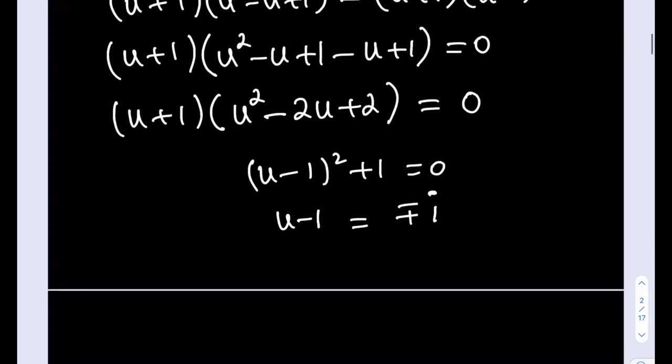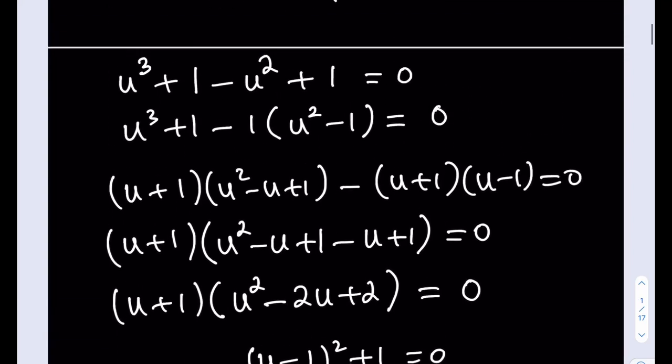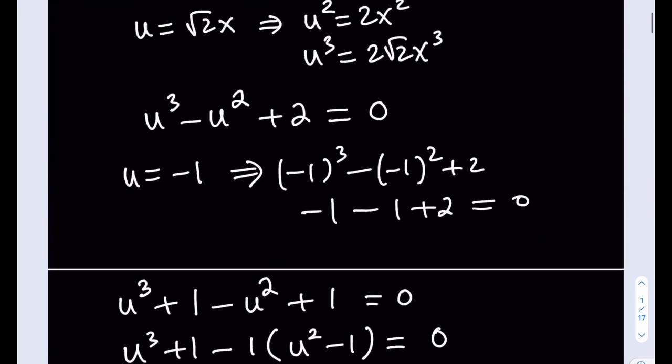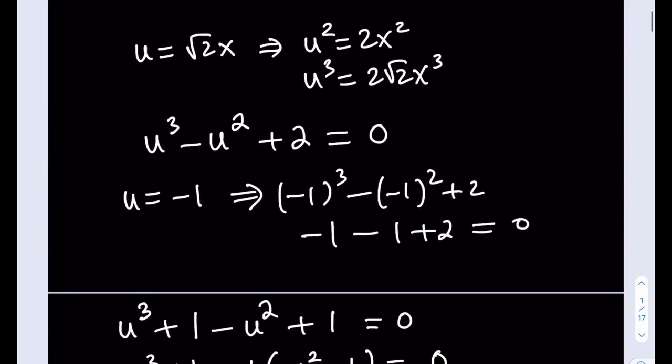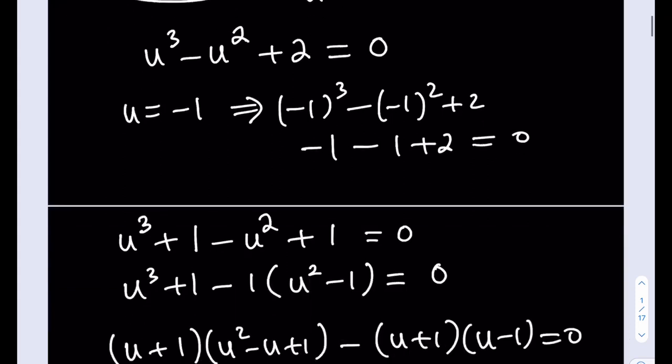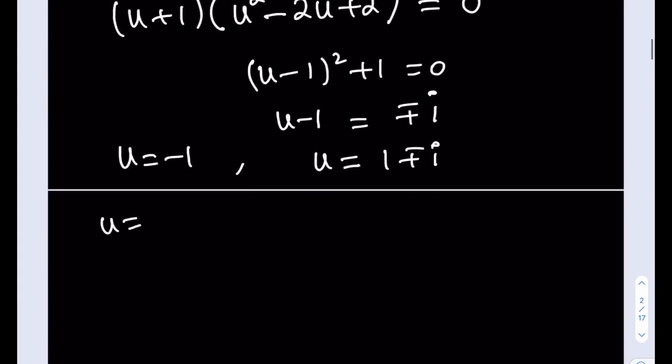So from here, we are finding that u is equal to 1 plus minus i. But remember, u is not what we're looking for. We are looking for x. And what is the relationship between u and x? We did that at the beginning, and it was a very important transformation, or you may call that substitution. So u is equal to root 2x. If we go ahead and set each one equal to this, we're going to be getting the x values from here. For example, if I set this equal to negative 1, then x becomes negative 1 over square root of 2, which is negative root 2 over 2. So this is going to be the real solution.